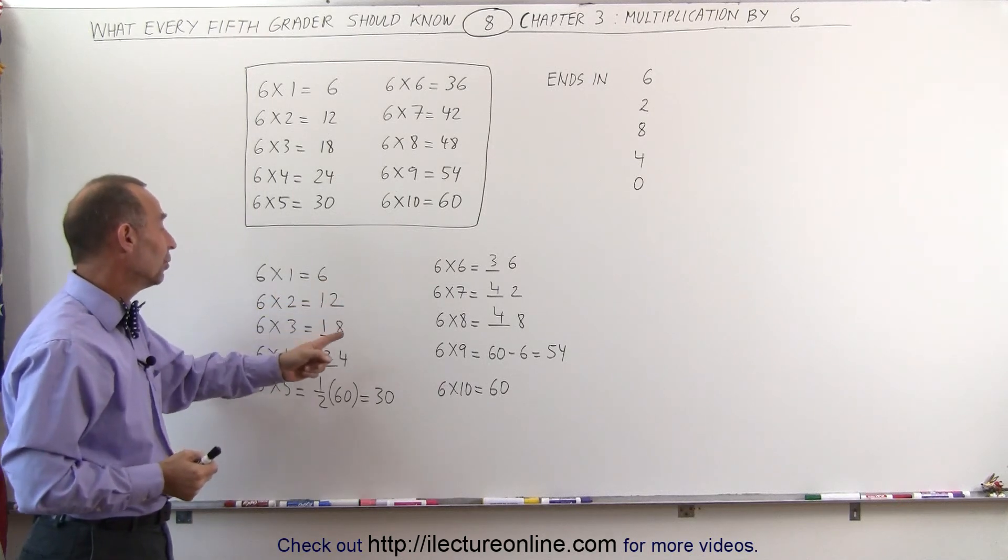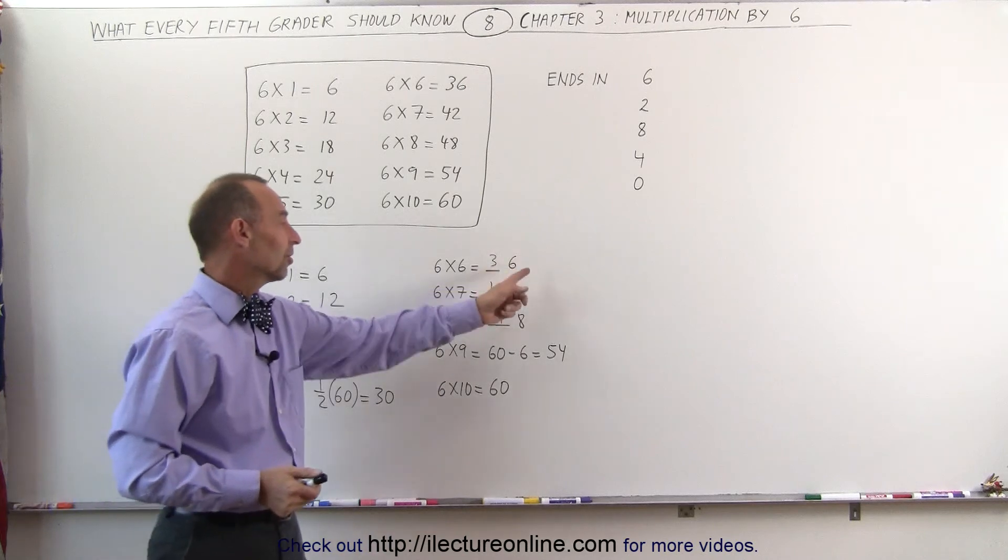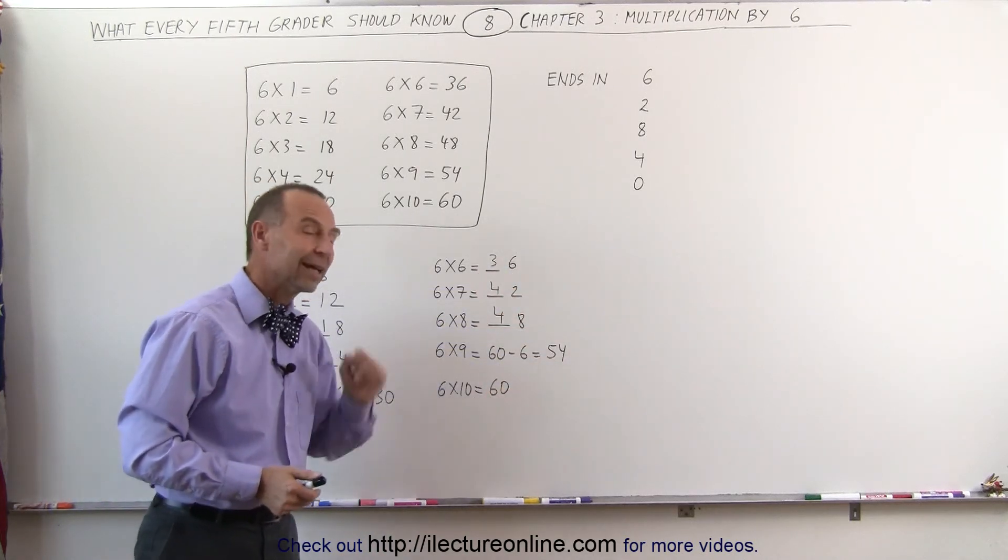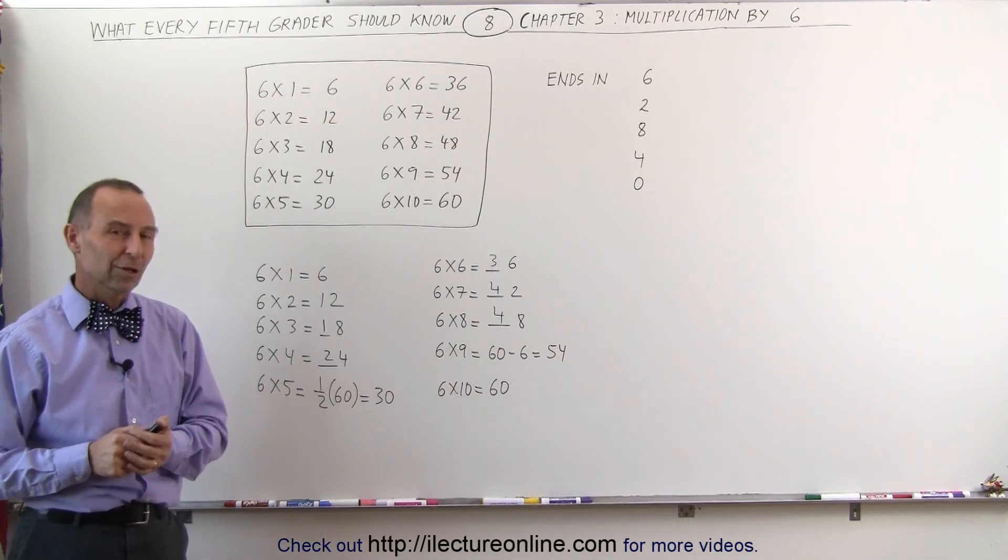Ends in a 6, ends in a 2, ends in an 8, ends in a 4, and you get 30. Ends in a 6, ends in a 2, ends in an 8, ends in a 4, and I get 60. And that's how I memorize how I multiply with the number 6.